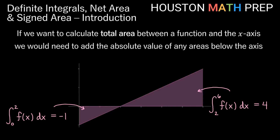If we want to calculate the total area between a function and the x-axis, we need to add the absolute value of anything below the axis. The region above the axis is positive four, and the region below is one unit of area calculated as negative — so we take its absolute value to get positive one, then add the area above the axis. We get a total area of five units.